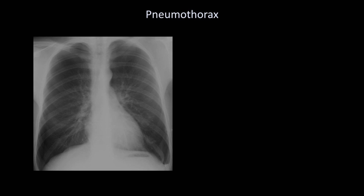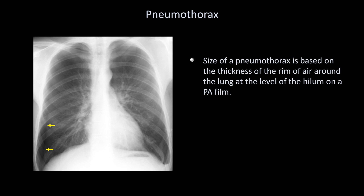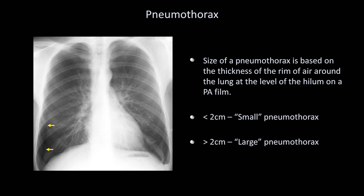Consider this x-ray. Do you see anything unusual? If you look closely at the lateral aspect of the right lung, you'll notice a subtle vertical line, lateral to which there are no lung markings — a pneumothorax. The size of a pneumothorax is given in very qualitative terms and is based on the thickness of the rim of air around the lung at the level of the hilum on a PA film. Less than 2 cm is generally referred to as a small pneumothorax; greater than 2 is referred to as large.